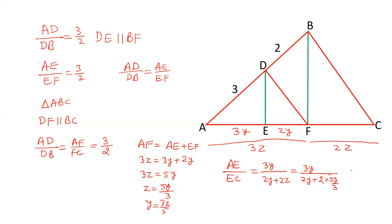5 into 2 is 10, 3 into 2 is 6. So, this is 3y upon 2y plus 10y upon 3. 6 plus 10 is 16y by 3. AE upon EC is equals to 3y upon 16y upon 3. And this can be written as 3y upon 16y into 3. y cancels out. 3 times 3 is 9. 9 by 16. The ratio of AE and EC will be 9 to 16.